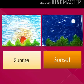Sunrise is the time when the sun appears and daylight arrives. Sunset is the time when the sun disappears and the daylight fades.